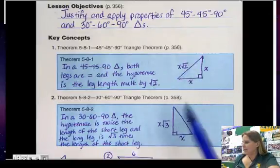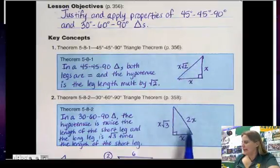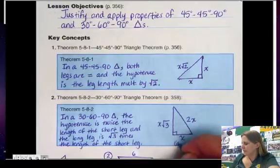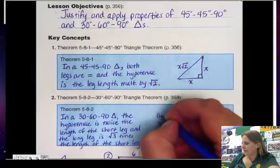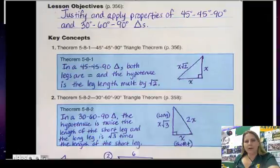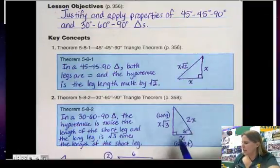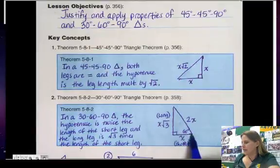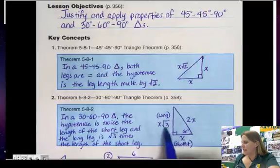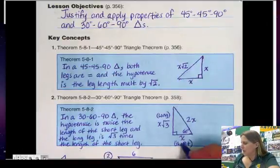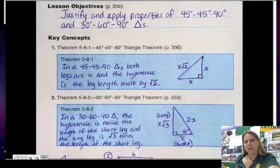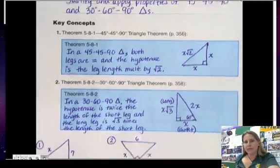In a 30-60-90, you have a short leg and you have a long leg. This is the short leg, and this one's the long leg, and then you have a hypotenuse. In a 30-60-90, the short leg is always doubled to get the hypotenuse, and then the long leg, in order to get the long leg, you take that short leg length and you multiply it by square root of 3. It seems rather simple, but some students get a little bit caught up in the details, so let's do a few examples.